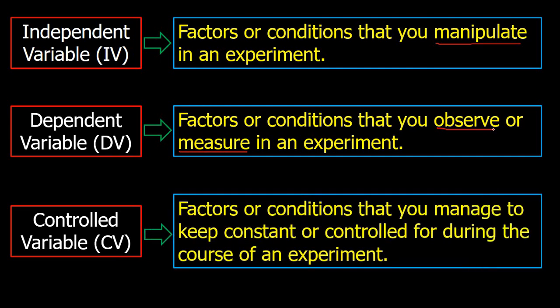And lastly, the controlled variable, or CV — factors or conditions that you manage to keep constant or controlled during the course of an experiment. The key word here is constant. To understand more on the relationship of these three variables in an experiment, let's have this diagram.